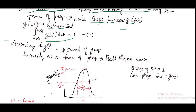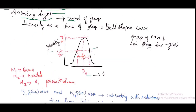Similarly, atoms are capable of absorbing light, not just at a single frequency, but over a band of frequency. If you plot a graph with intensity as a function of frequency, you would get a bell-shaped graph as shown in the figure. The shape of the curve is described by the line shape function g(ω).